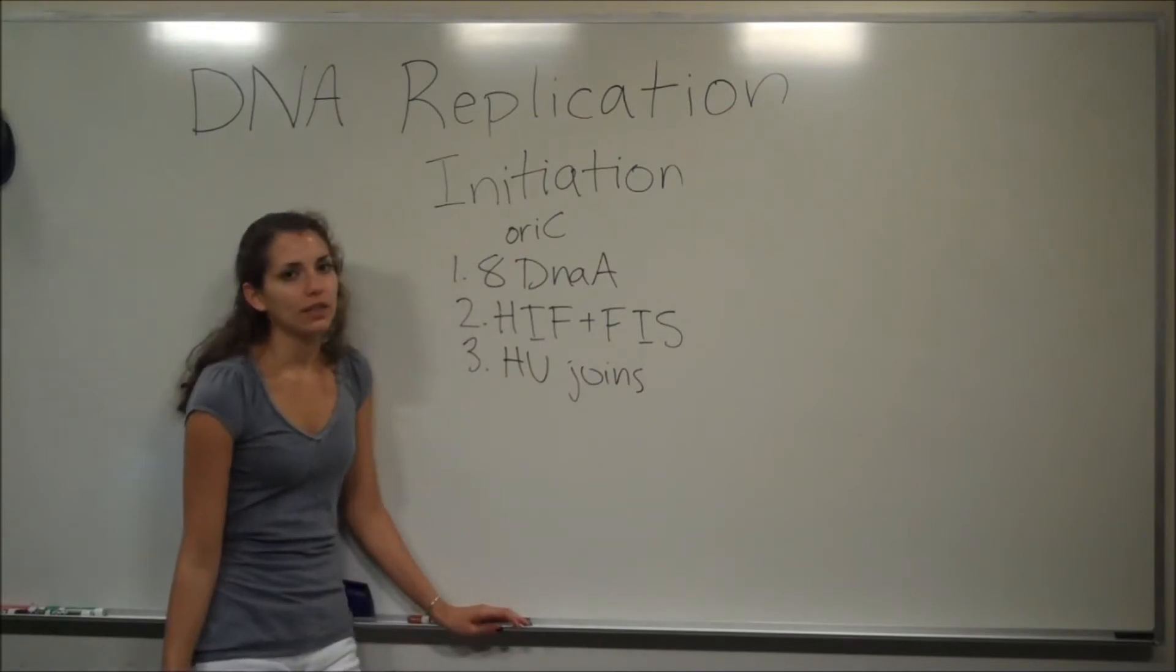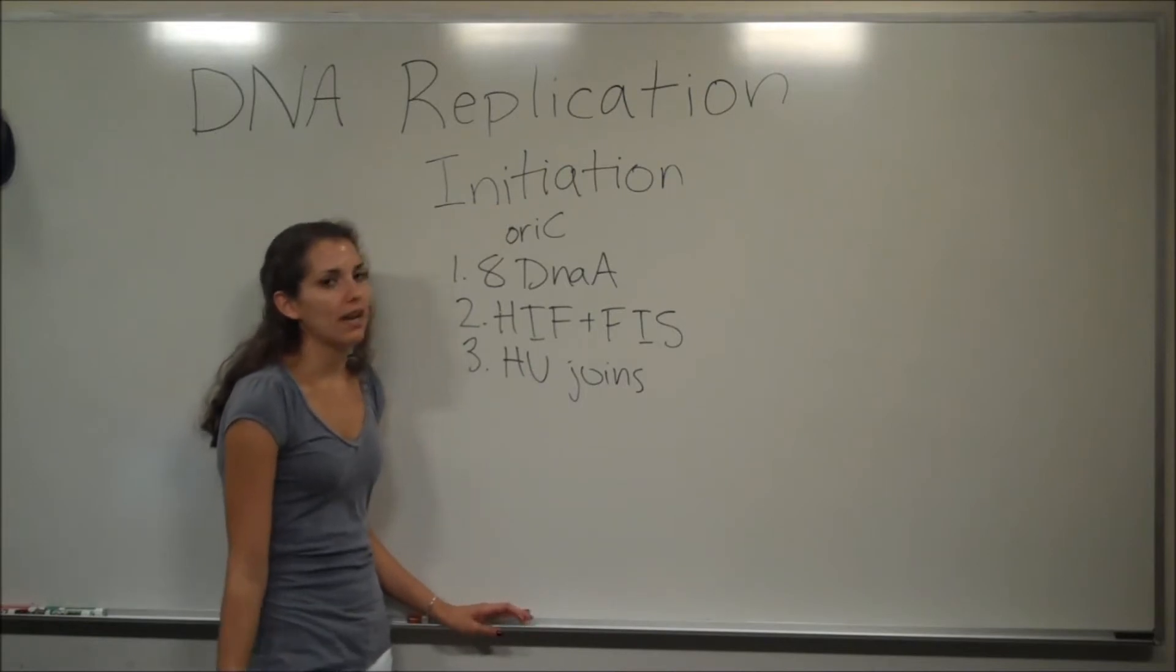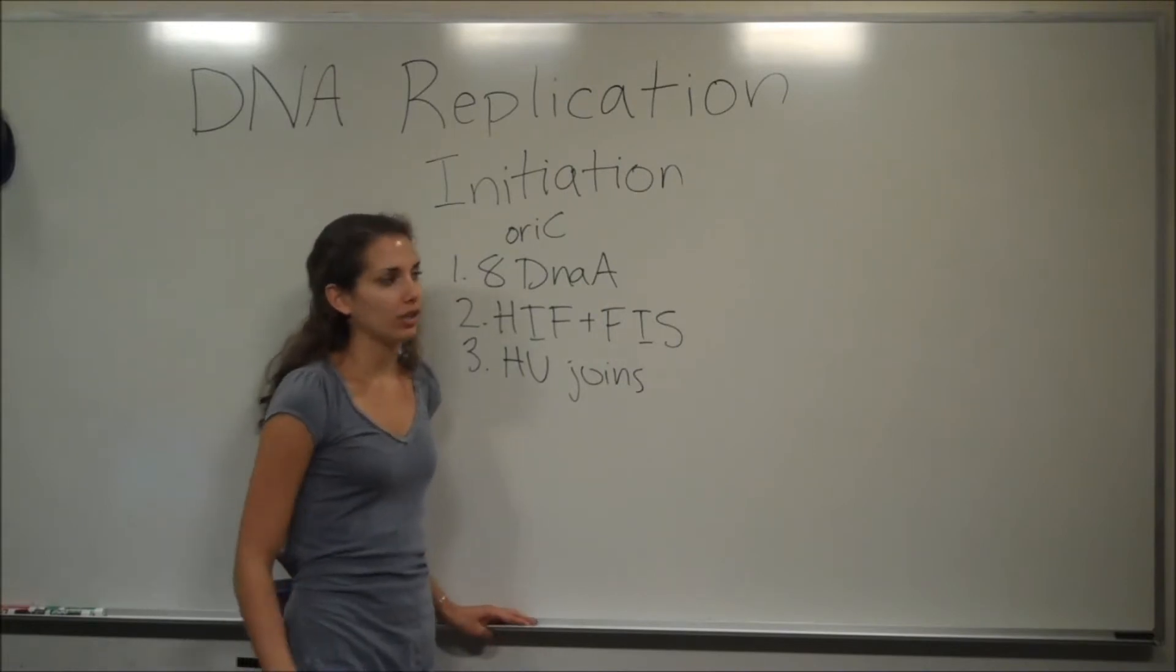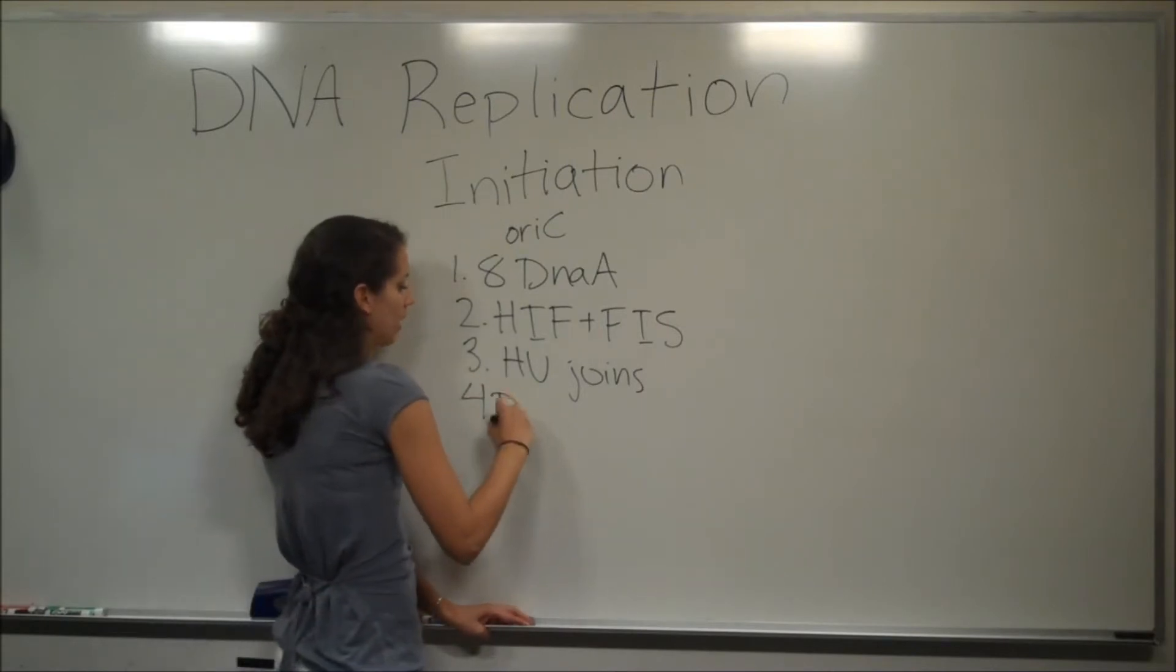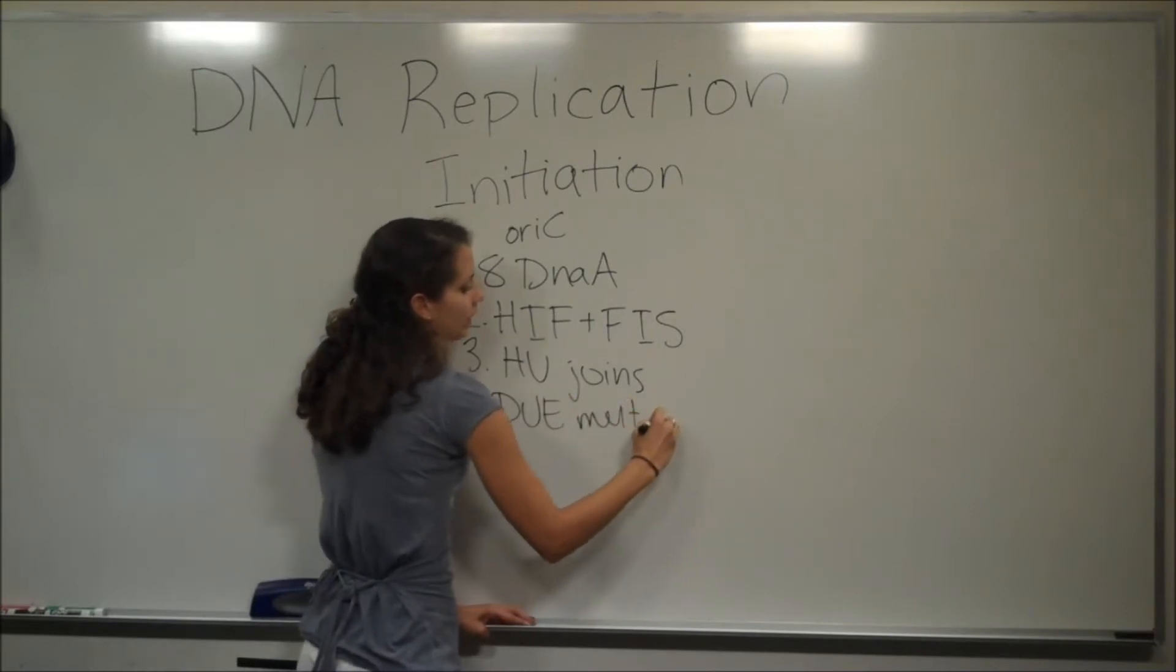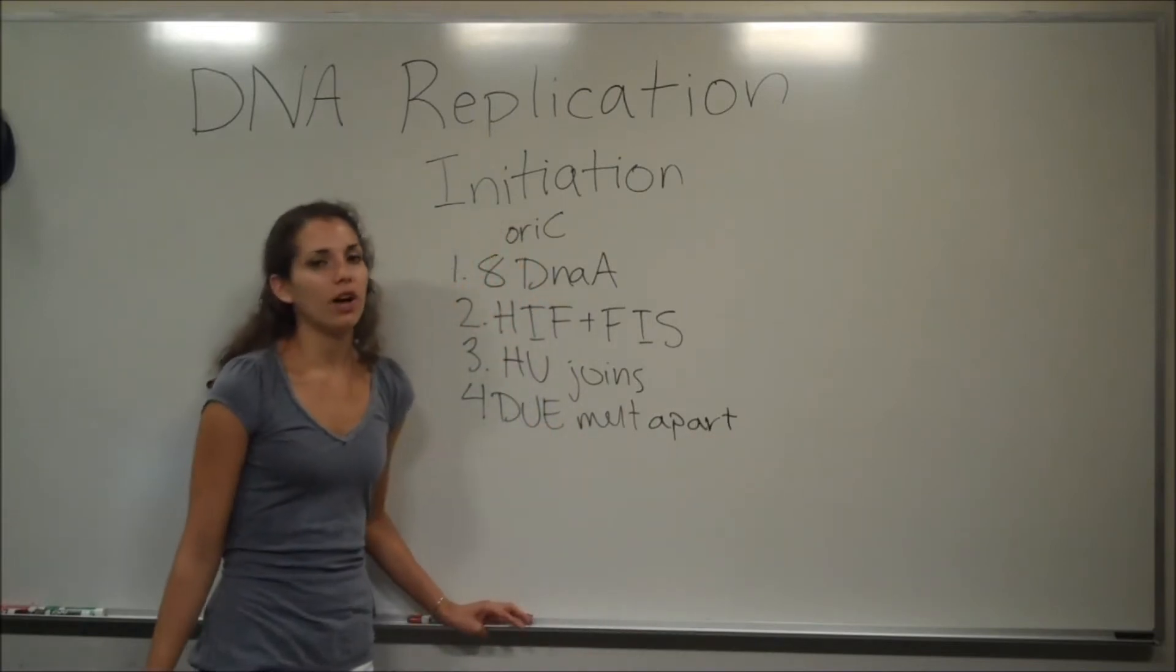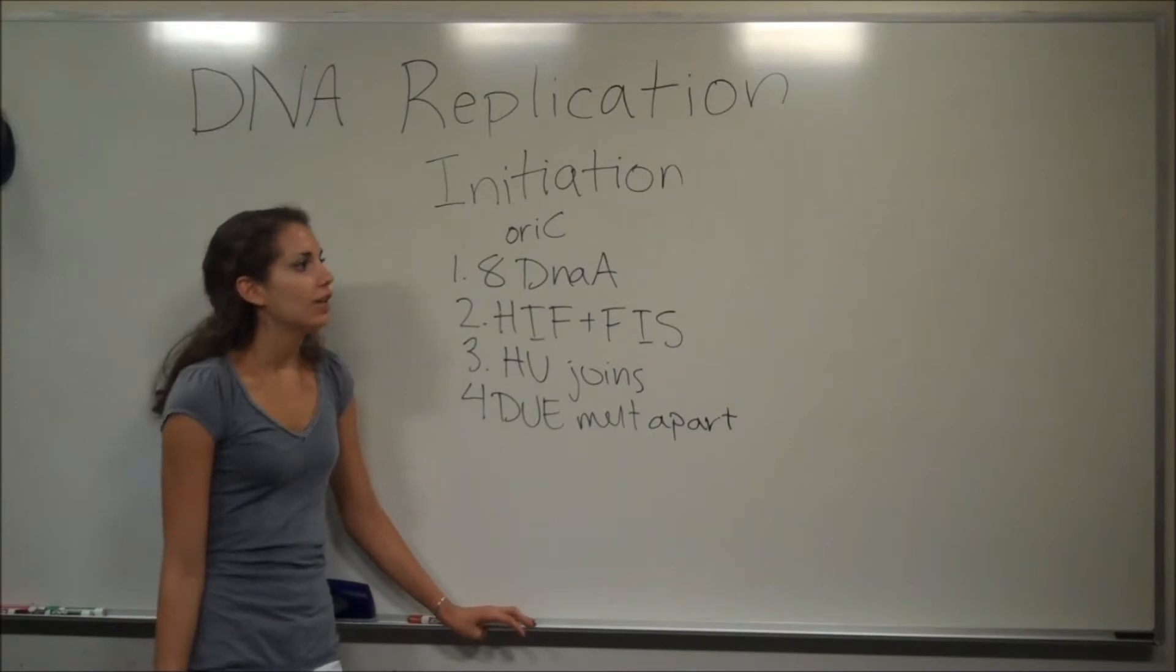At this point the oriC locus is going to be forced into a right-handed helix. This allows the two strands in the DNA unwinding element. The DNA unwinding element is just adjacent to the origin of replication. It's not actually within the origin of replication. So these two strands in the DUE are going to melt apart. And this is going to allow the proteins and the enzymes that are involved in elongation of DNA replication to bind.